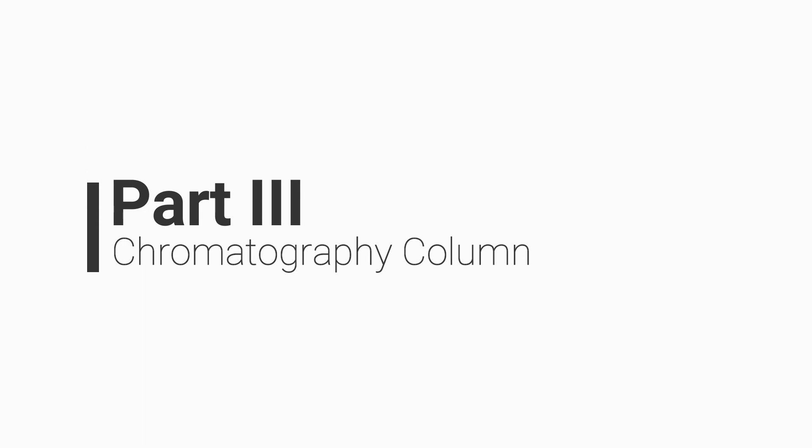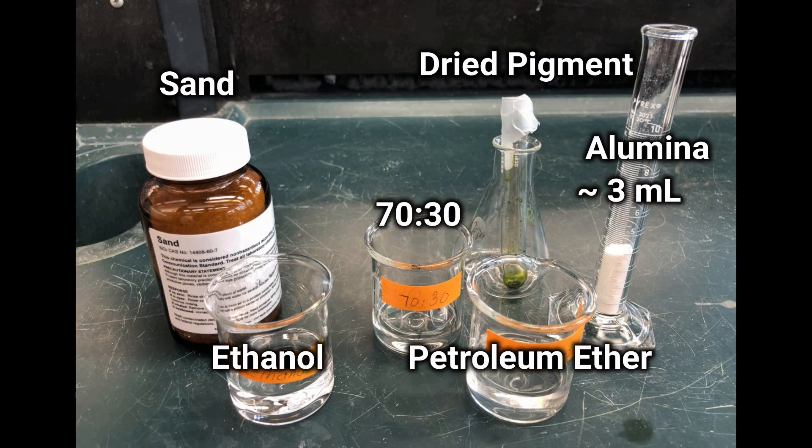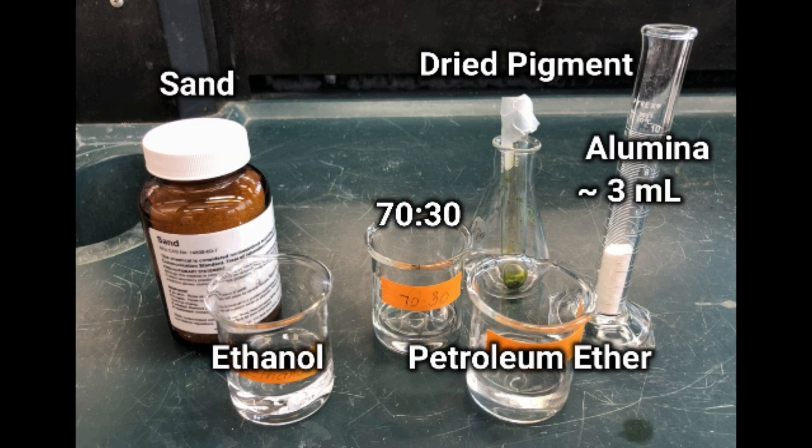In part 3, we will be separating the pigments using column chromatography. You will need sand, about 5 milliliters each of ethanol, petroleum ether, 70-30 petroleum ether, and about 3 milliliters alumina as well as the dried pigment from part 2.